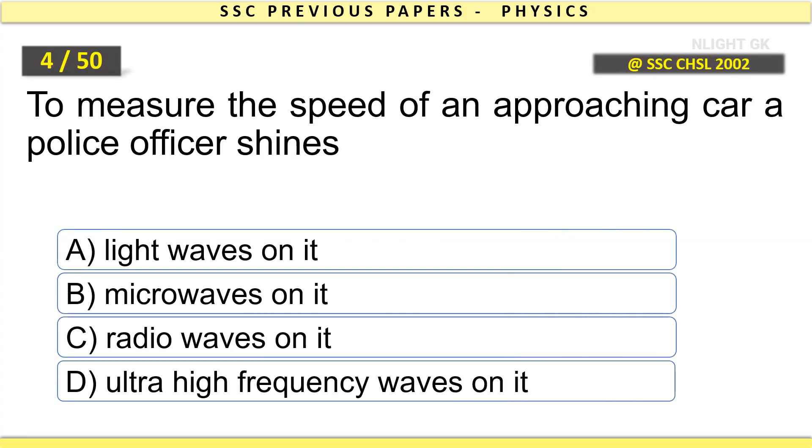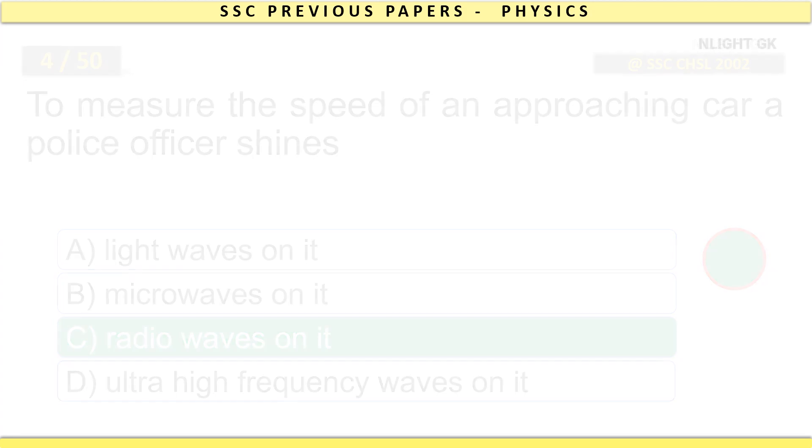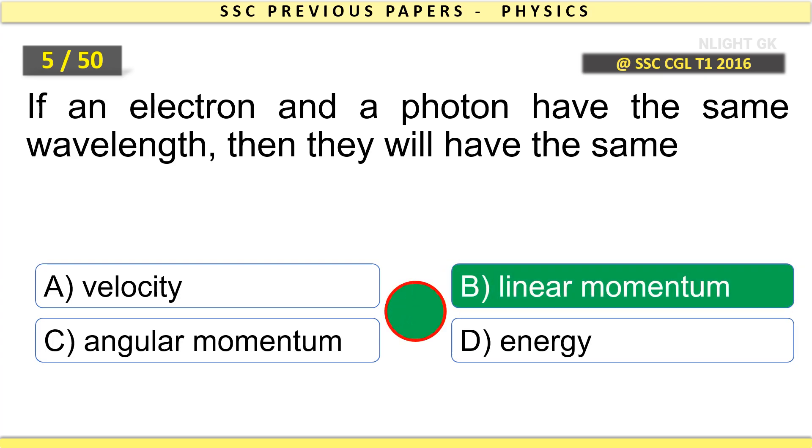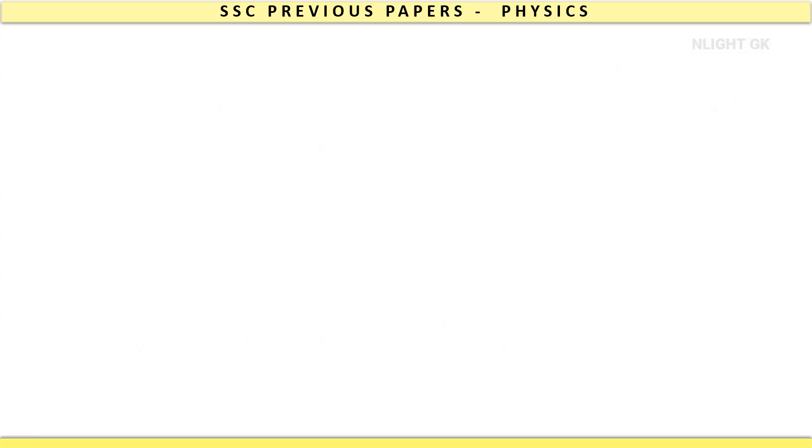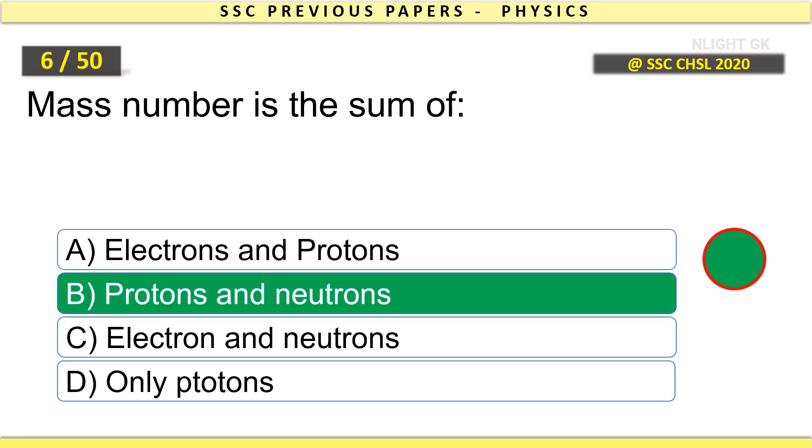To measure the speed of an approaching car, a police officer shines radio waves on it. If an electron and a photon have the same wavelength, then they will have the same linear momentum. Mass number is the sum of protons and neutrons.